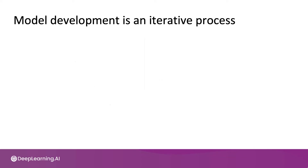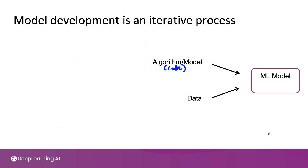Diving into more detail: when building a machine learning system, you may have an algorithm or a model — this would be your code — and some data. It's by training your algorithm on the data that you then have your machine learning model that can make predictions. Hyperparameters are an additional input to this process.